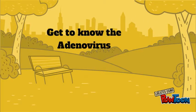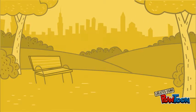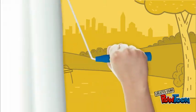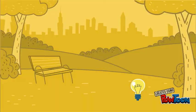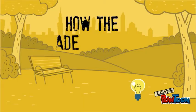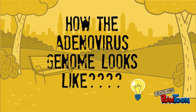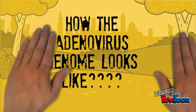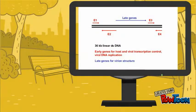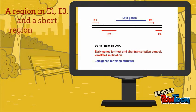What is adenovirus? How do you think the adenovirus genome looks like? The adenovirus consists of E1, E2, E3, and E4 regions.